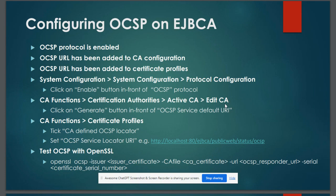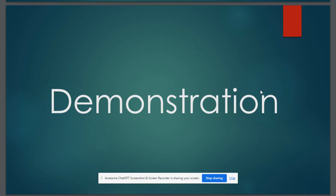Once this is done, OCSP will be ready to be used, and the CA will start adding that OCSP link into every certificate created using this profile. We can test the OCSP responder using OpenSSL by executing the command: openssl ocsp, then providing the issuer certificate, the CA certificate, the OCSP URL, and the serial number of the certificate we want to verify.